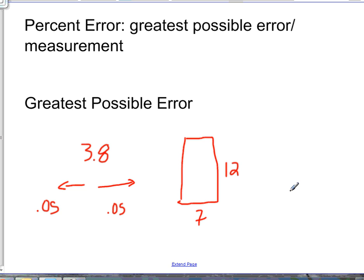However, using this percent of error we would solve it using either 11.5 times 6.5 or 12.5 times 7.5.